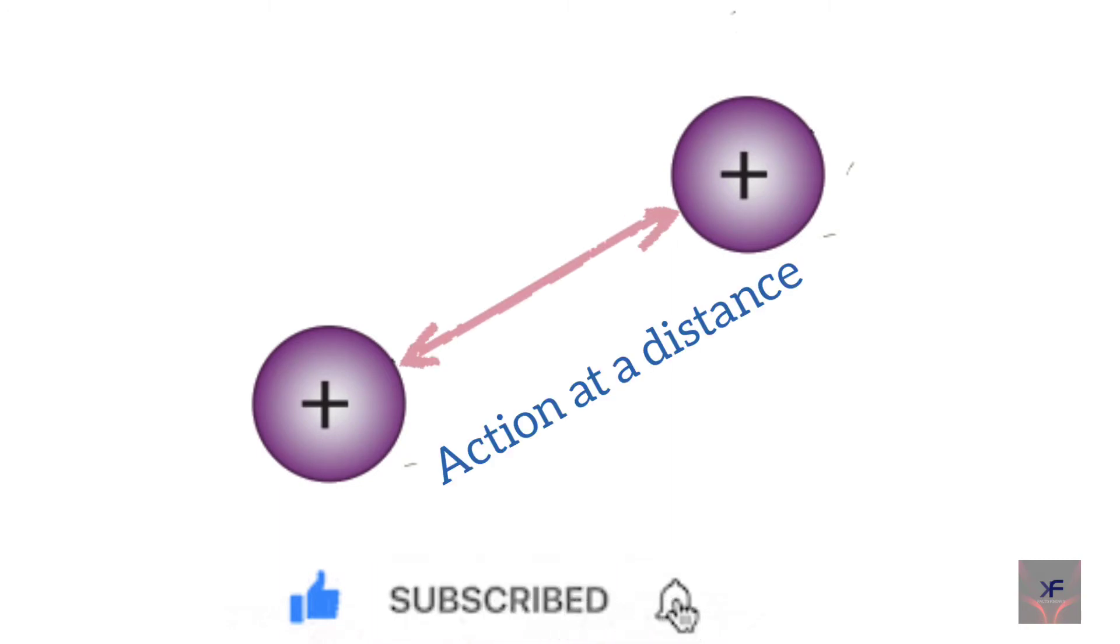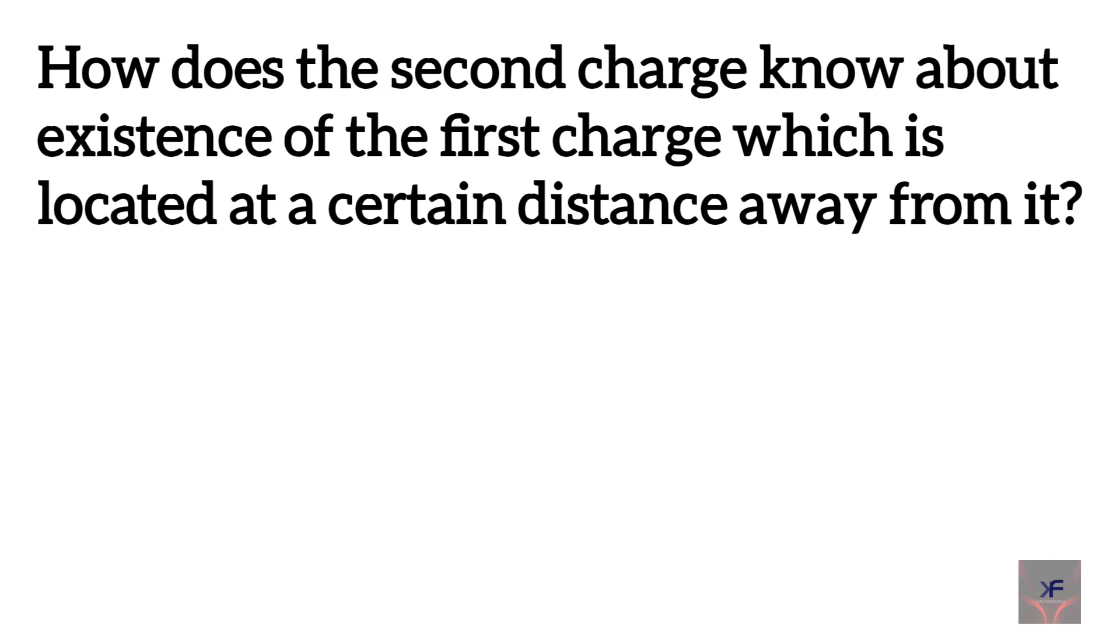This is called an action at a distance. So the question is, how does the second charge know about existence of the first charge which is located at a certain distance away from it?